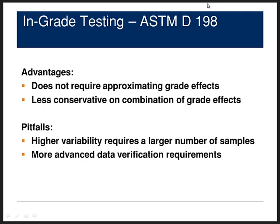In-grade testing has the advantage of direct testing of the grade effects, so it's a little less conservative because you don't have to separately estimate and combine grade effects. However, it still goes back to the same duration of load, repetitive member effects, and most other effects from the 1920s small clear testing. Because grade defects are included, it has higher variability than small clear testing, meaning you need more samples to reach the same confidence level for your fifth percentile estimate. The inclusion of defects also makes it easier to get skewed results, requiring more advanced statistical tests to verify the data.